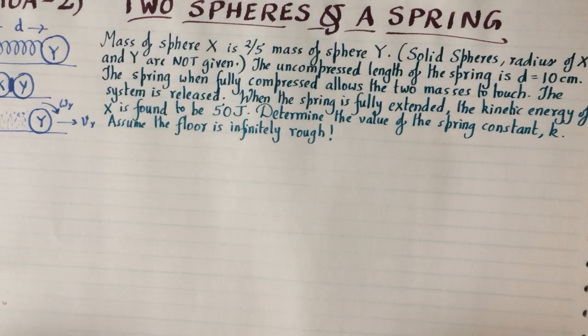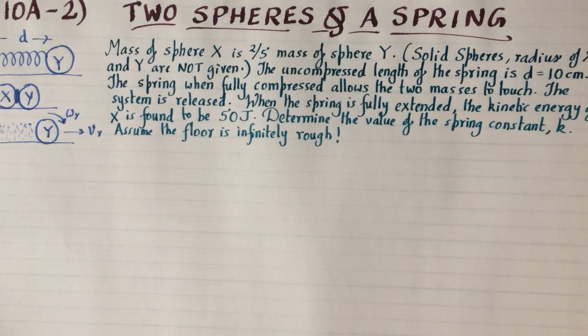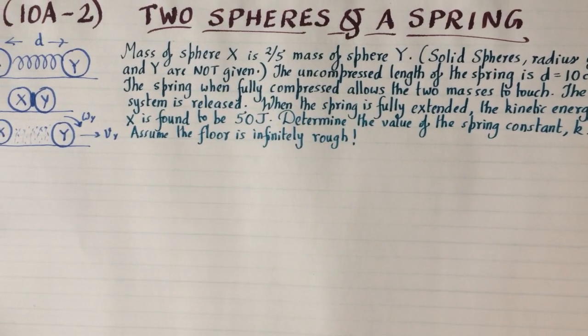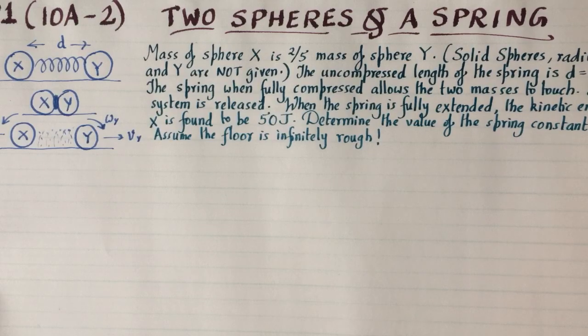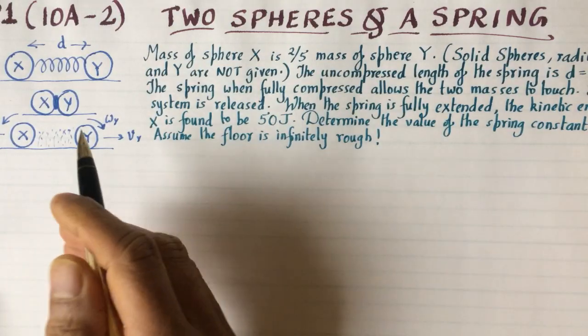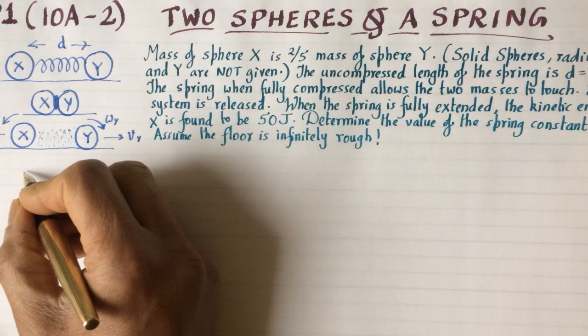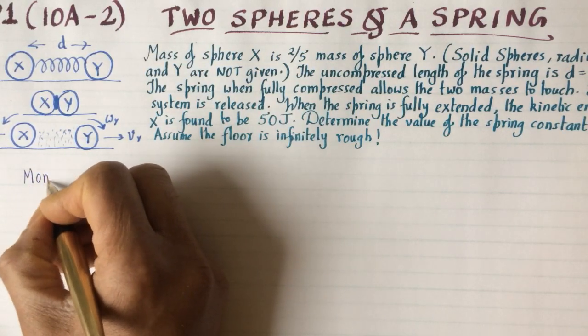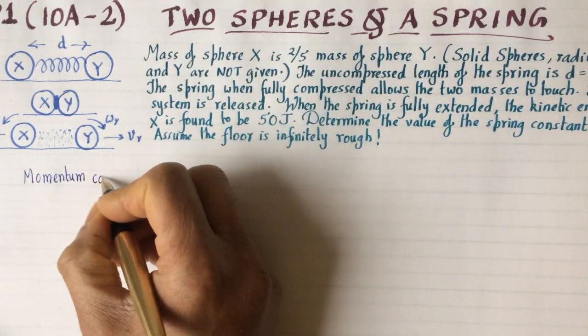This is a very interesting problem because of what you need to do to get the answer. When you have springs, you know that energy is involved, but you have to be careful because we don't know yet what proportion of energy goes into X and what goes into Y. It would be a classic mistake to think that 2/5 of the energy goes into X. That's simply not correct. The operating principle is actually momentum conservation. Linear momentum needs to be conserved in this problem.